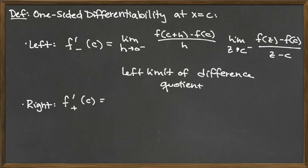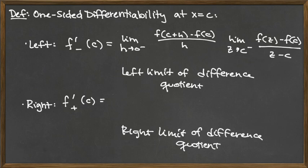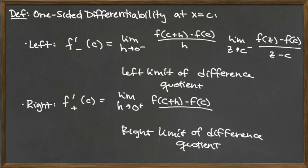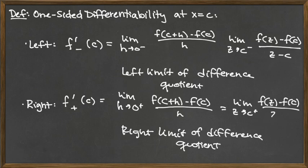For the right limit of the difference quotient, we replace the minus signs with plus signs — that would be the right-hand limit: f of c plus h minus f of c all over h, which is the same as the limit as z approaches c from the right of f of z minus f of c over z minus c. These aren't really new things to memorize — just think about it: differentiability from the left means the left limit of that difference quotient, and right differentiability means the right limit of the difference quotient.